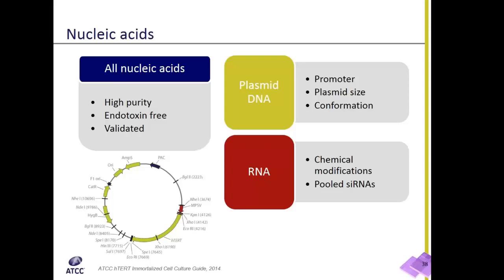For plasmid DNA, one should try several promoters, as a promoter's effectiveness often depends on the cell type. CMV and EF1-alpha are generally considered to be strong, all-around promoters, and therefore a good place to start.